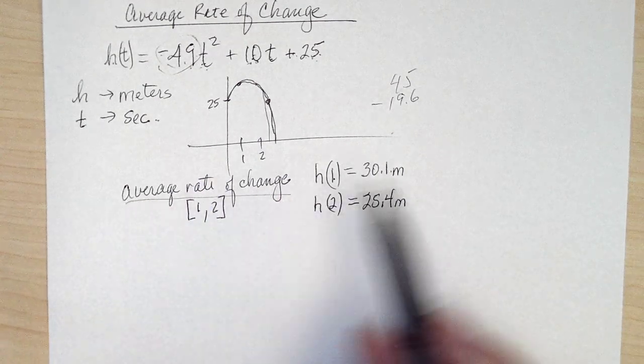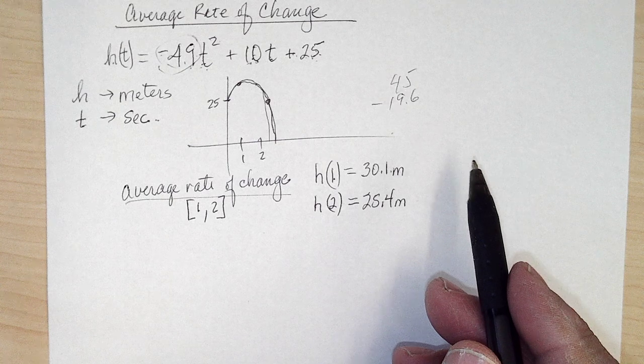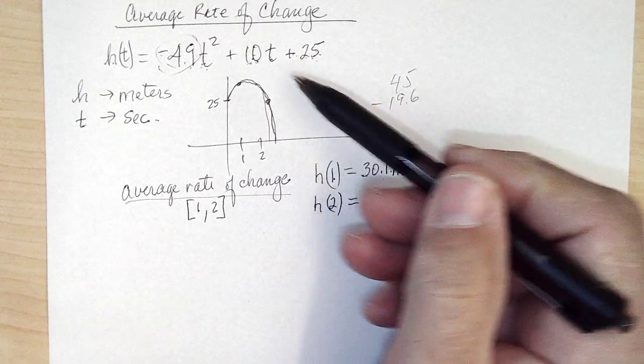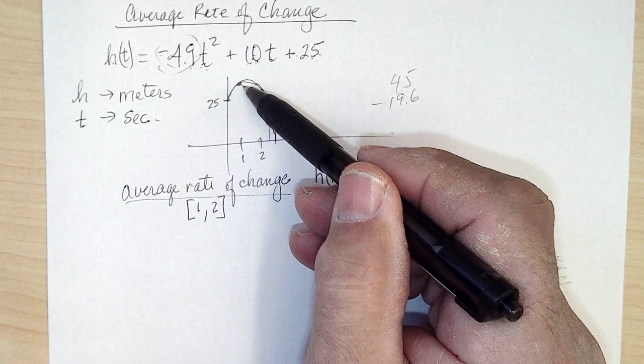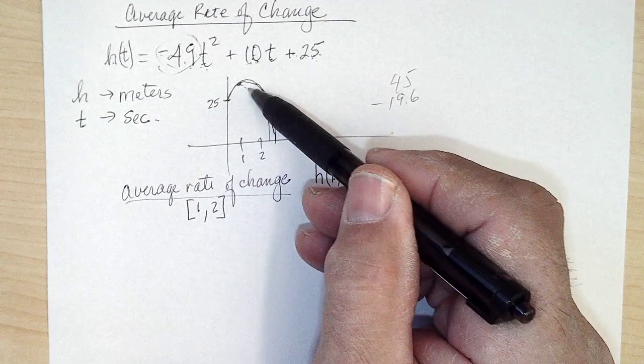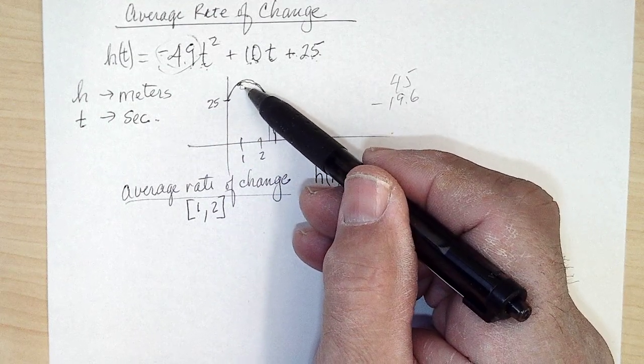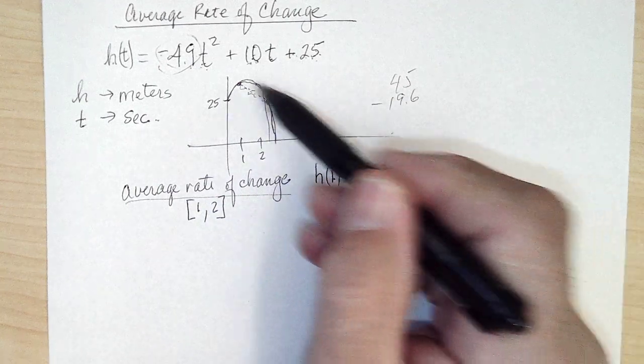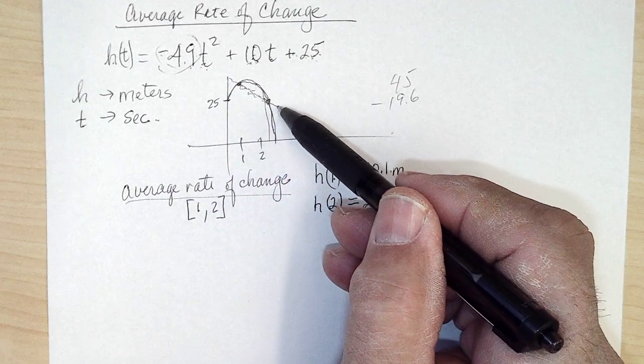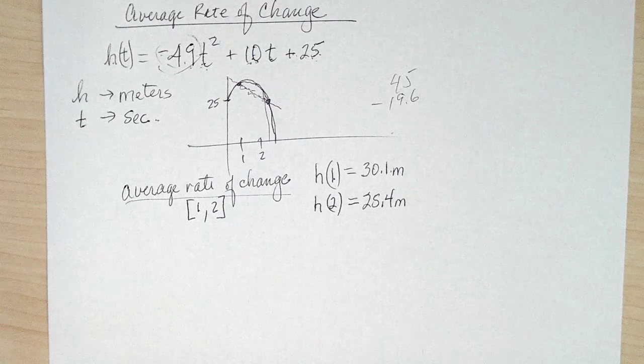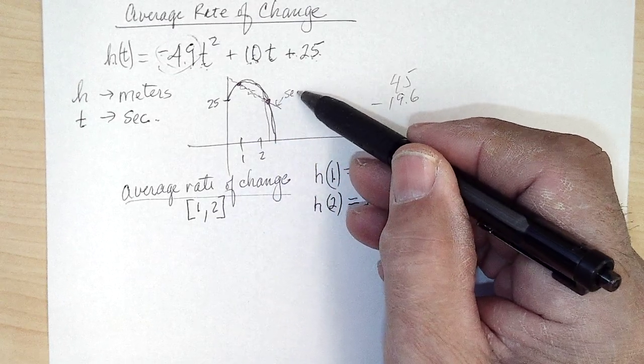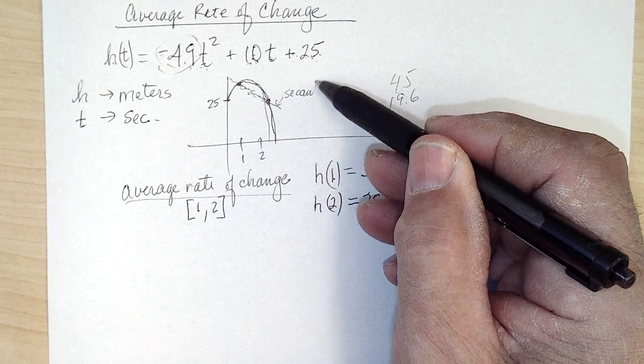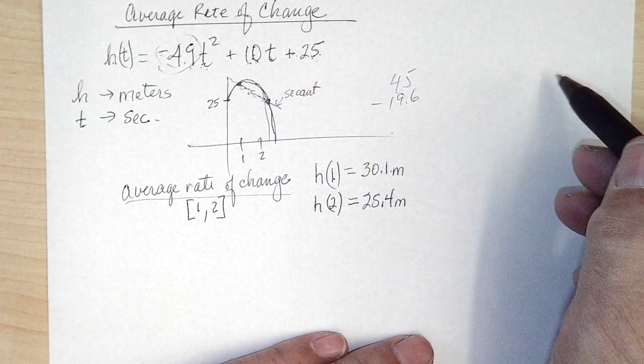So average rate of change. What would it have to be doing to get to this height from this height? Well, on average, it would have to be going down at a constant amount per time. So the average rate of change is just the slope of this line, and that's called a secant line. Just a little vocabulary lesson.